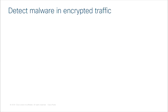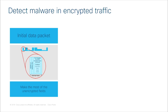There are three key data elements that allow for analysis and discrimination of legitimate versus malicious traffic. The first one is the Initial Data Packet, or IDP. The initial packets of any connection contain valuable information about the content. IDP allows the analytics engine to access the SSL headers of HTTPS flows and application headers of related connections, helping us make the most of the unencrypted fields.